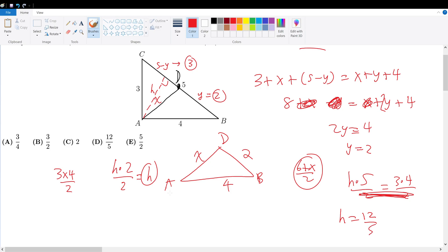That means the area for this triangle must be H, which is 12 over 5. Therefore, your final answer must be choice D.